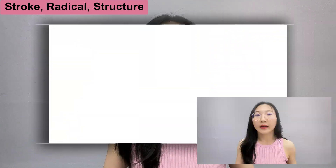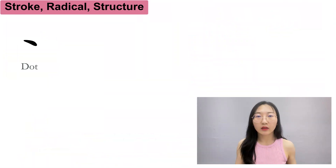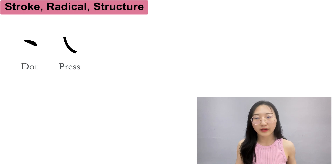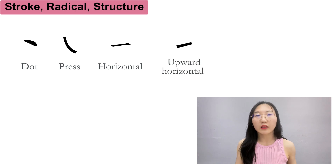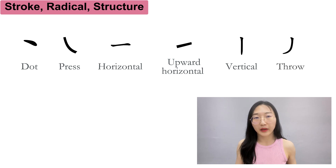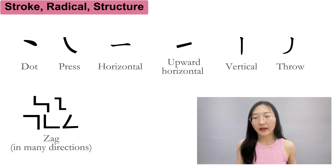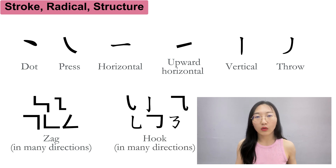They are: 点 (dot), 纳 (press), 横 (horizontal), 提 (upward horizontal), 竖 (vertical), 撇 (throw), 折 (deck), and 够 (hook).